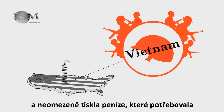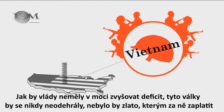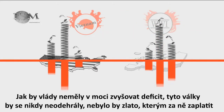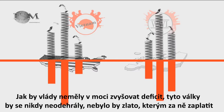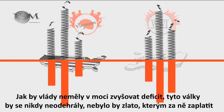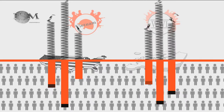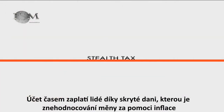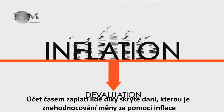Sound familiar? If governments didn't have the power to run up deficits, these wars could never have happened. There wasn't the gold to pay for them. The bill is eventually paid by the people through the stealth tax that is currency devaluation by inflation.